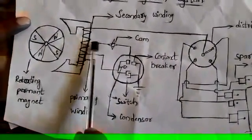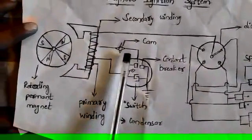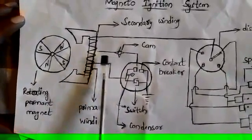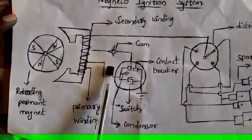The cam is connected between the secondary winding and the contact breaker. When we require discharge between these two, the cam is rotated by the rotating shaft.